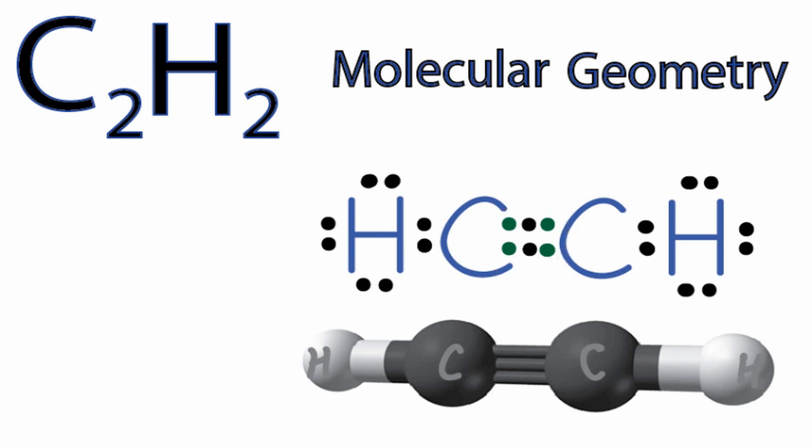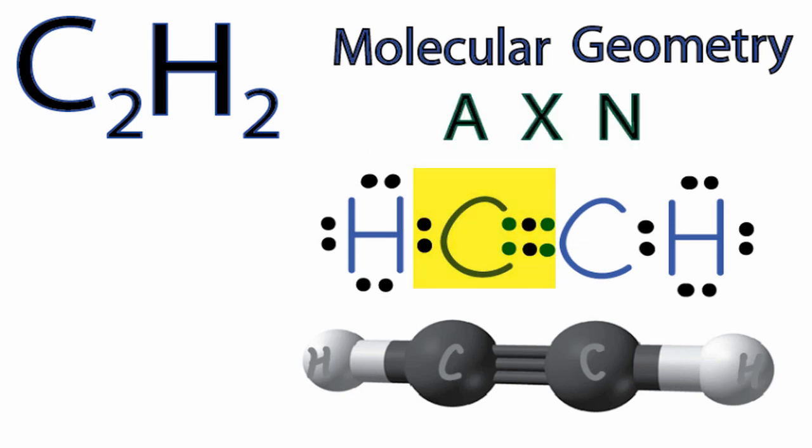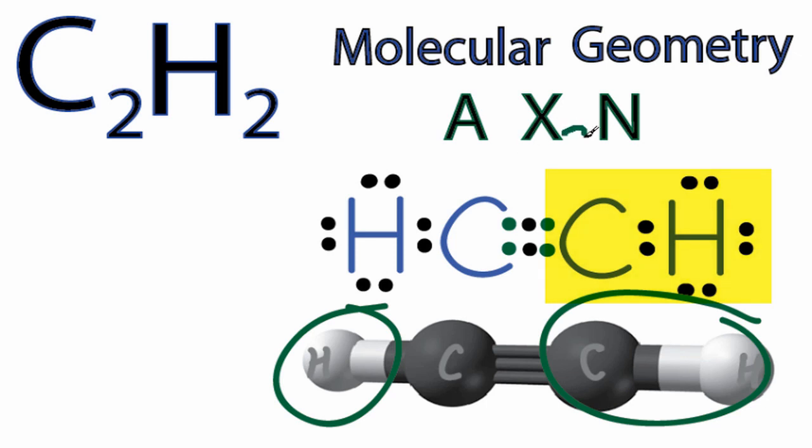We could also use the AXN notation to figure out the molecular geometry for C2H2. A, that's the carbon we're interested in. X, that's the number of things bonded to it. We have the hydrogen here, and then we have this piece over here. So we put a 2 for X.